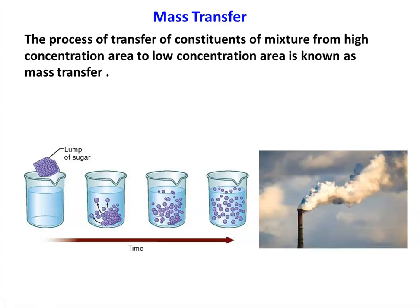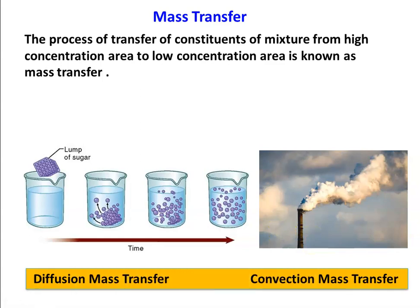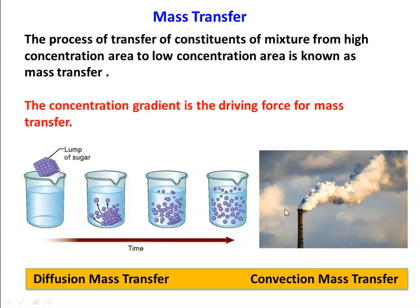Another situation: take a tall chimney. From the top of the chimney, smoke moves into the atmosphere with a certain velocity, and after some time it disperses into the atmosphere. These two are the two modes of mass transfer. One is called diffusion mass transfer and the other is called convection mass transfer. The driving force for mass transfer is concentration gradient — just as temperature gradient is the driving force for heat transfer, and voltage difference is the driving force for electrical current flow.